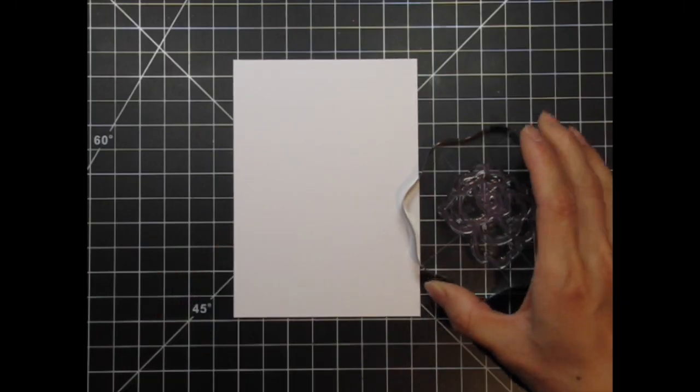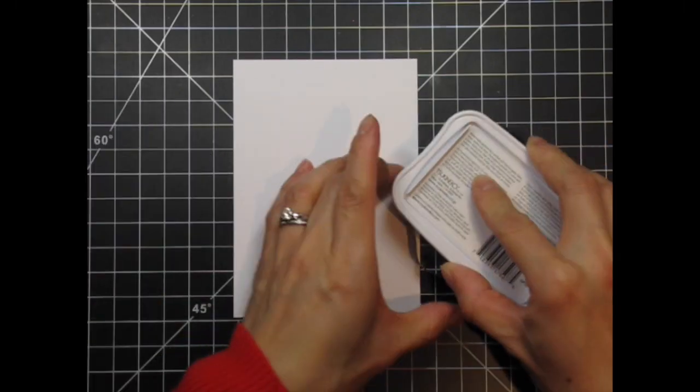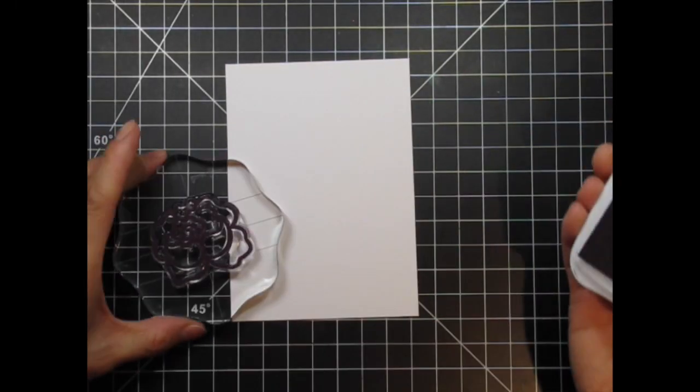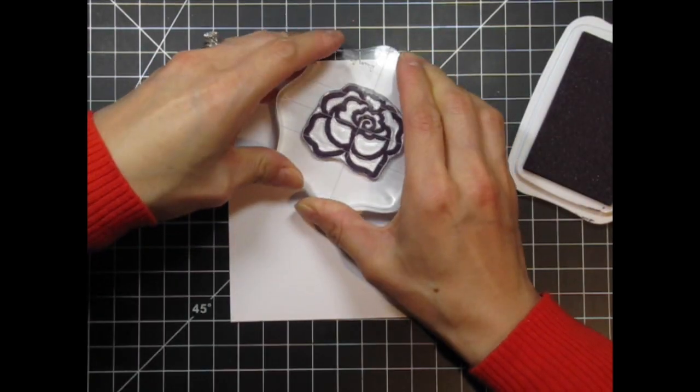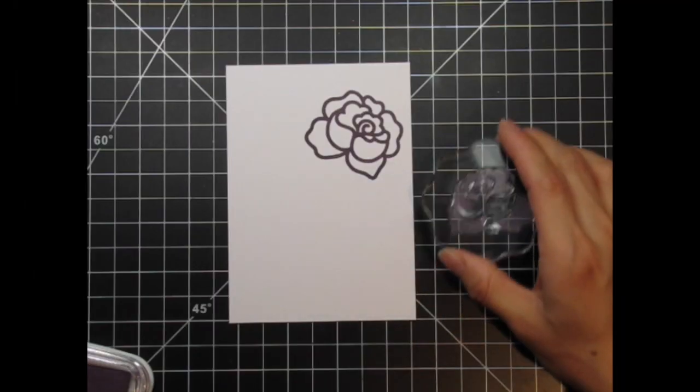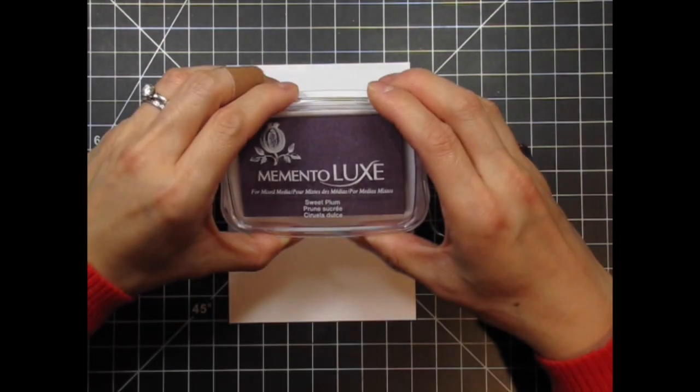I start with a craft card base and trim a white panel that is a half inch smaller. I stamp the outline of the big rose in Memento Luxe Elderberry. The second part will be stamped in Sweet Plum, and the third part will be stamped in Lilac Posies.